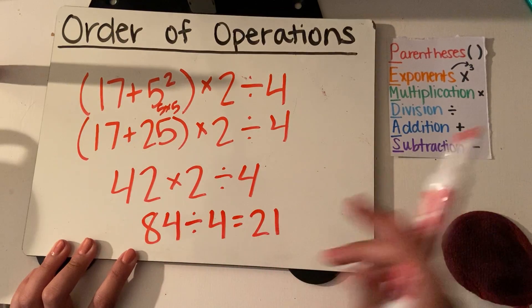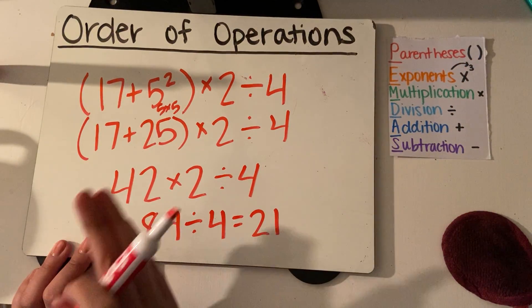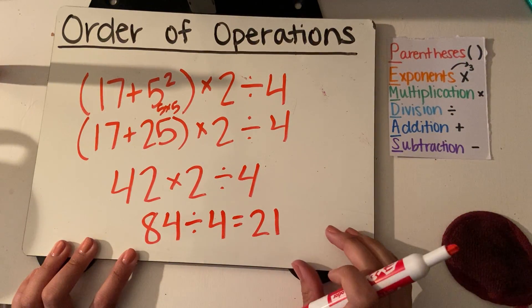So once you're left with the same signs in a grouping, you could call it, you can just move from left to right. Perfect. All right. Thank you.